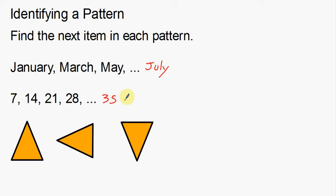Last but not least, we have this pattern down here — it looks like isosceles triangles, like ice cream cones. The first one is pointing up, the next one is pointing to the left — the top lopped over to the left side — and then the next one is pointing down. So a pattern starts to emerge. The shape keeps rotating counterclockwise 90 degrees each time: up, then left, then down.